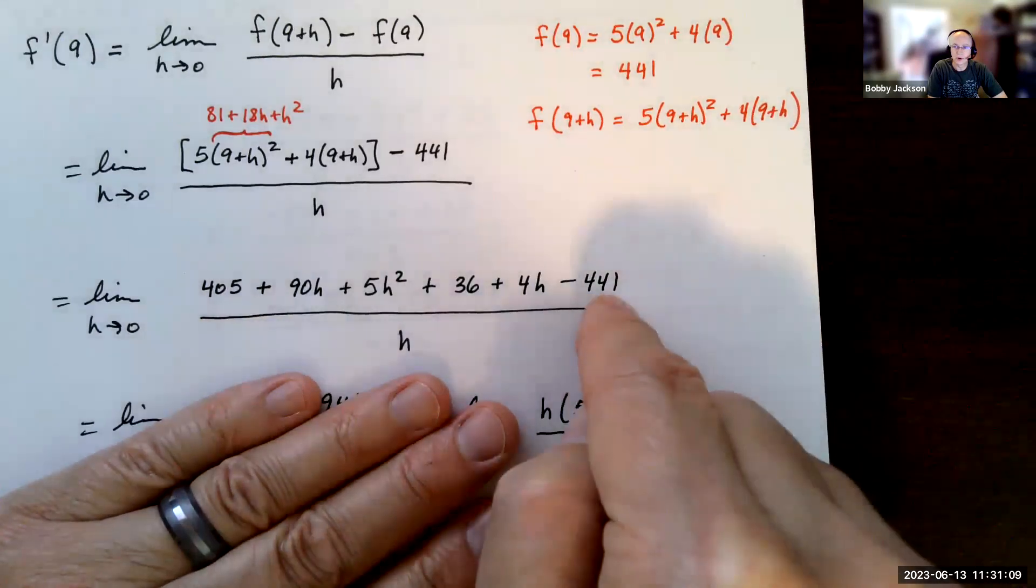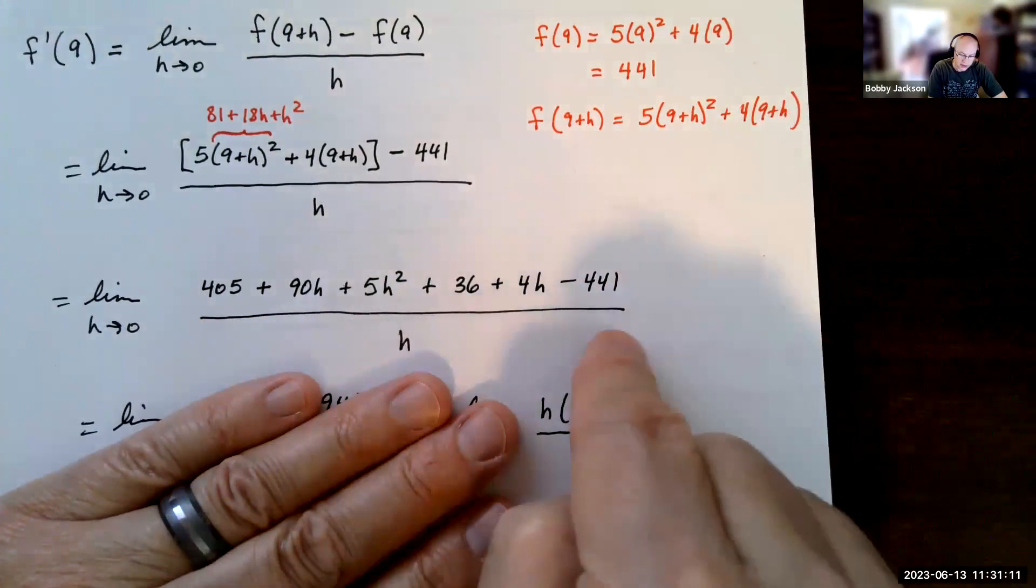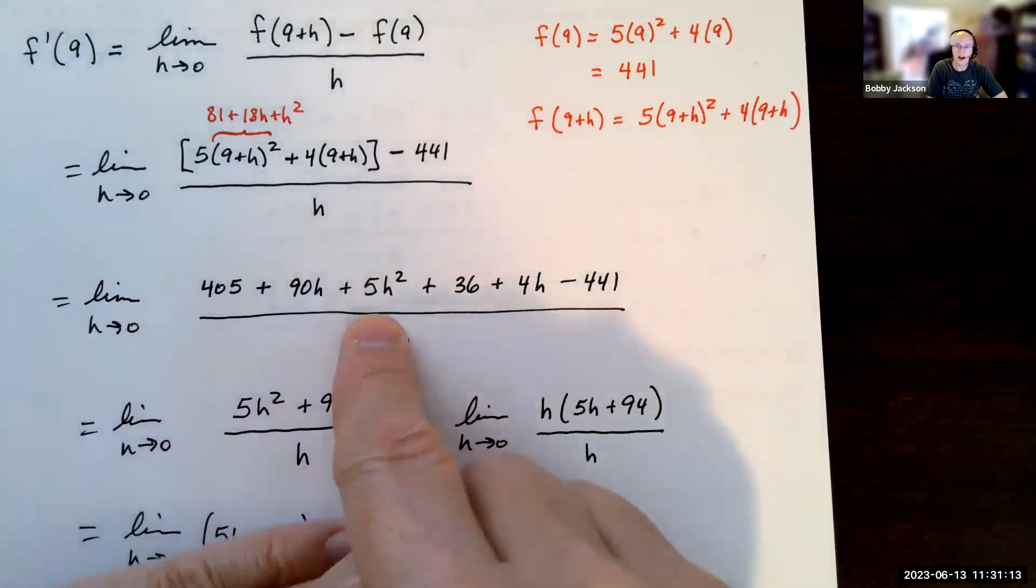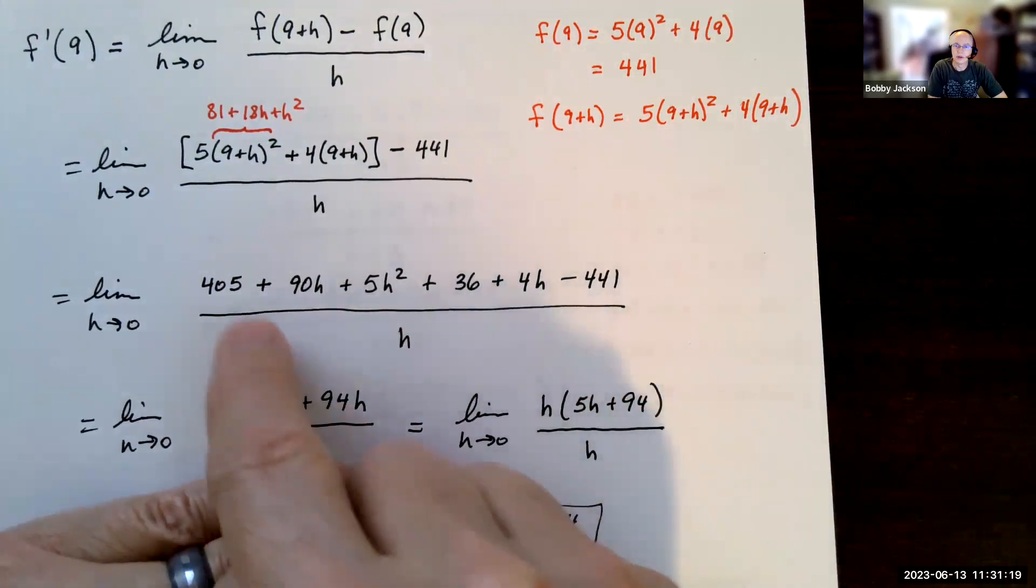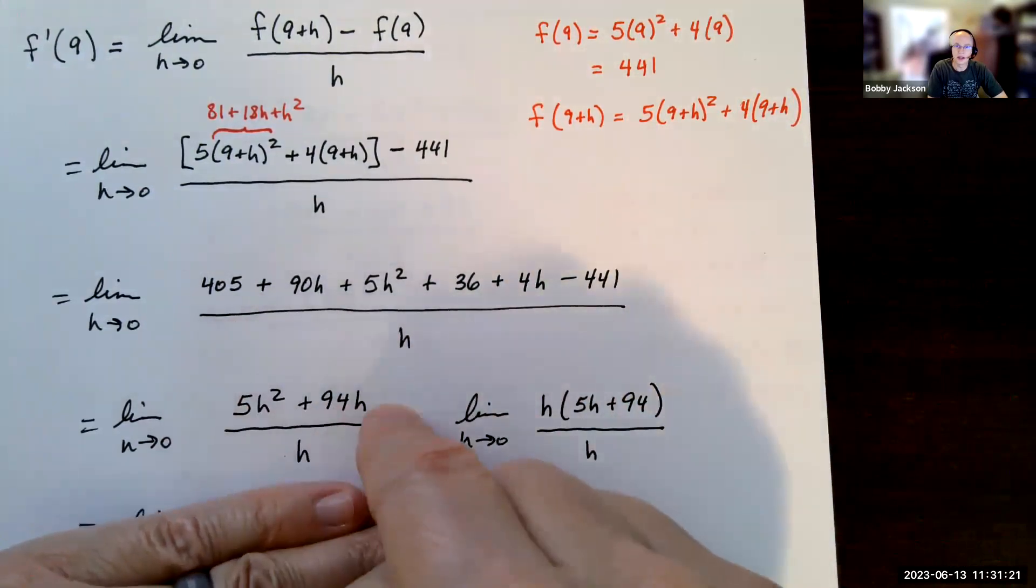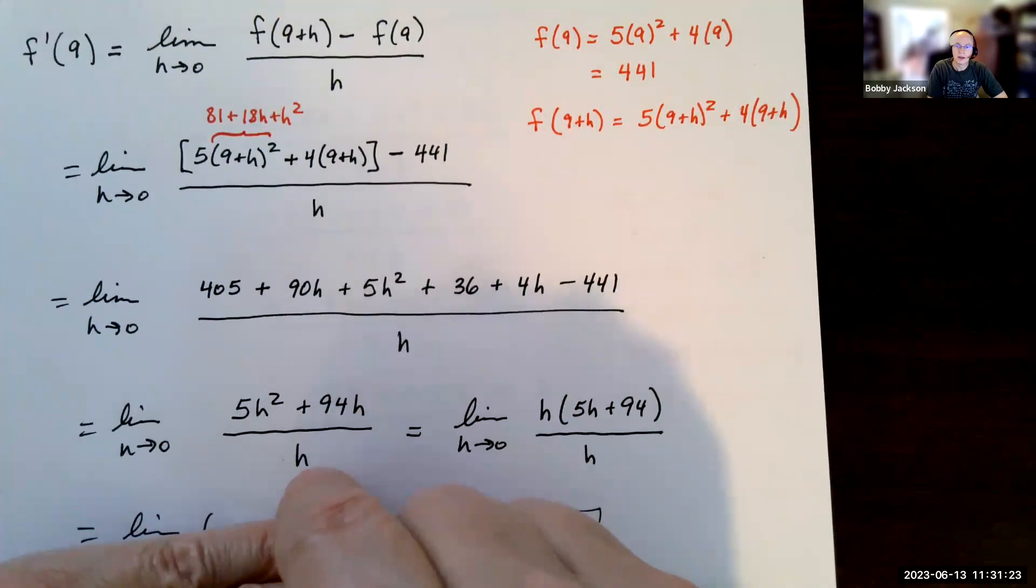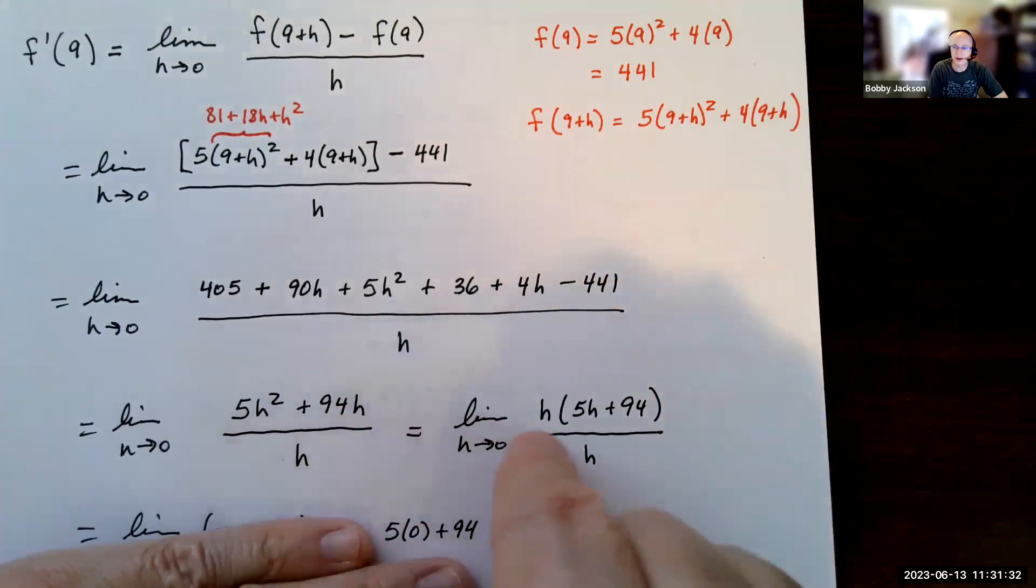Still, if I try and plug in h equals zero, I get zero over zero. Well, notice up top that means I have a factor of h, and we can see that both terms here have a factor of h. So I'm going to factor that h out, leaving 5h plus 94. Now h divided by h is one.